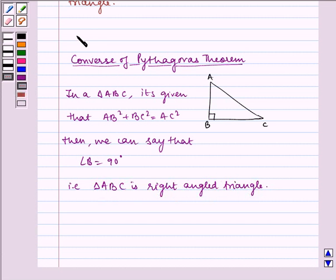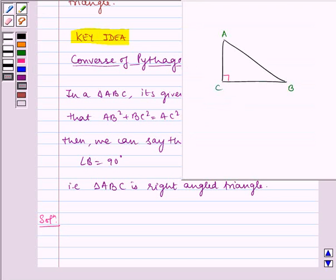This is the key idea to our question. Now, let us write the solution. Let us see the figure. ABC is an isosceles triangle with AC equal to BC.